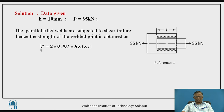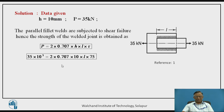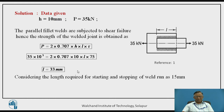Whereas there are two fillets, so the total strength of the joint, that is the load carrying capacity of the joint, will be P = 2 × 0.707 × H × L × τ. Substituting the values, we obtain L = 33 mm. So the length required for carrying the load effectively is 33 mm. However, we have to add 15 mm to this for starting and stopping of the weld run, because when the welder starts welding, a proper weld is not obtained over the initial length, and the same happens when stopping. So total length required is 48 mm.